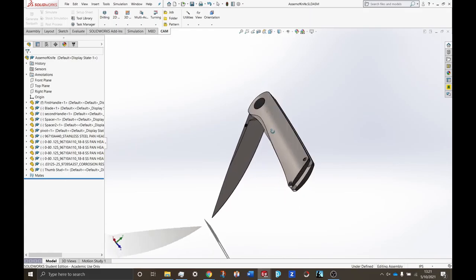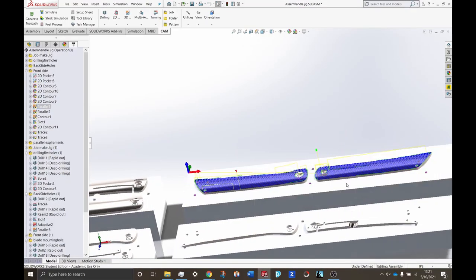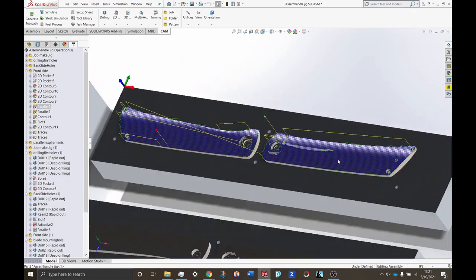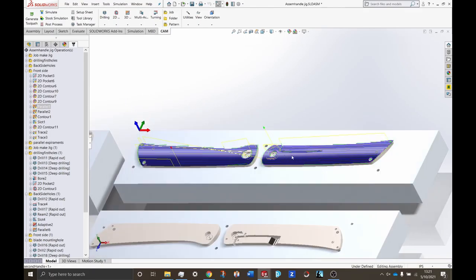This was just because when I did the parallel toolpath over the top of these handles, they bowed up. Because I removed the material, they bowed up in the middle here and here, because I was also only holding them by screws here and in these holes.